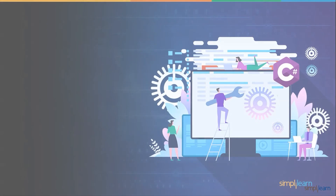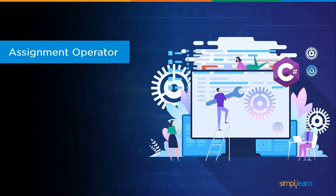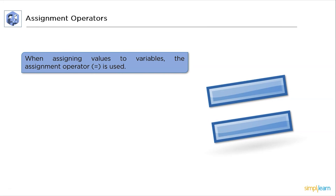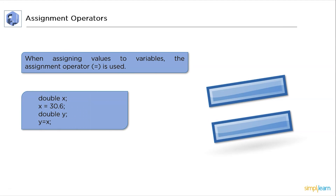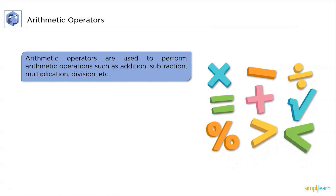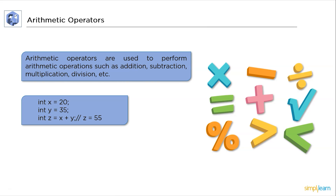Now let's discuss them in detail. First up, assignment operators. When assigning values to variables, the assignment operator — that is, the equal sign — is used, and here is the syntax for that. Next, arithmetic operators. Arithmetic operators are used to carry out arithmetic operations like addition, subtraction, multiplication, and division, and here is the syntax for that.